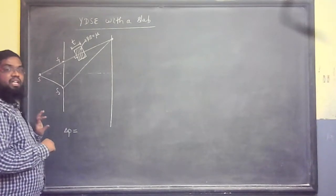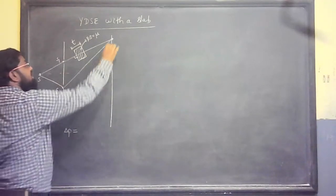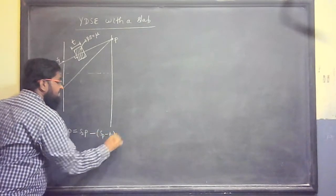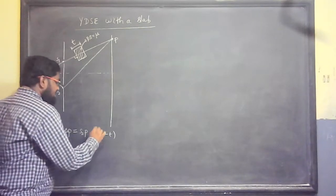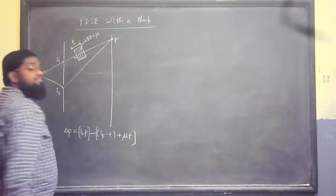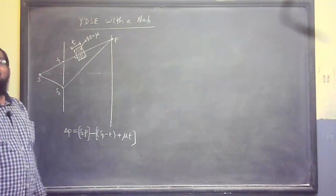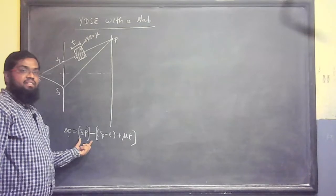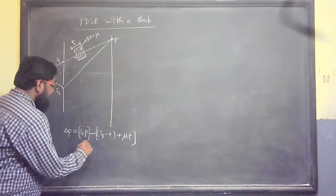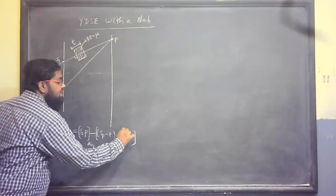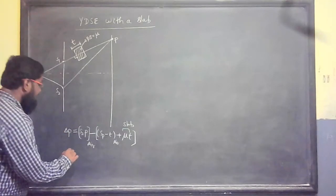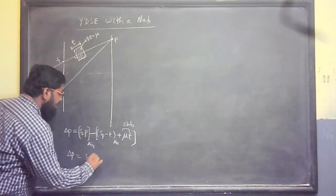No need to worry about the background, equal distances, worry about here. There is the point P on the screen, S2P minus S1P minus T in air. Minus plus mu T. S2P minus S1P that is T. That will be in the air medium. This is the air and this will be in the slab. Slab refractive index to multiply, air refractive index 1.